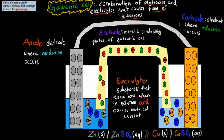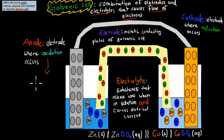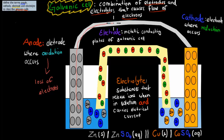We have different names for each type of plate. We have the anode, which is the electrode where oxidation occurs. Remember, oxidation was the loss of electrons. So the electrons might be lost at the anode, then they travel all the way up through the wire and then go all the way to the cathode. The anode is where oxidation occurs, and you always have your electrons being lost at the anode and moving to the cathode.